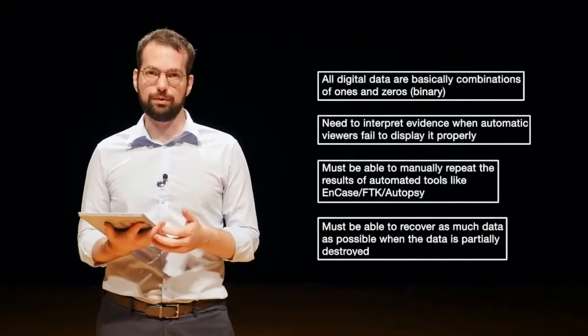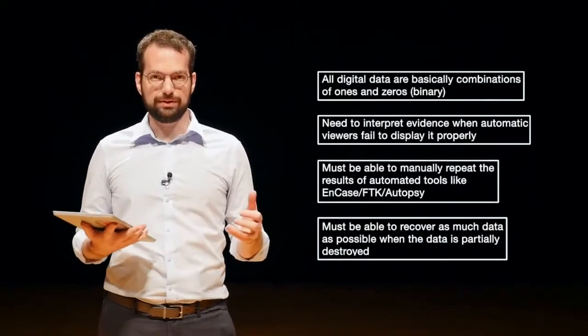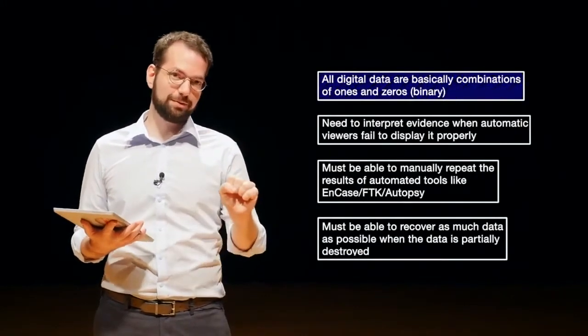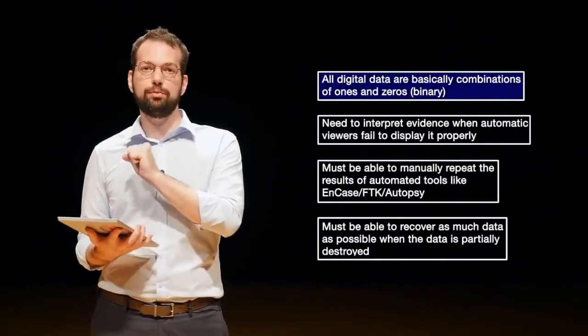So whenever we're talking about data on computers or on your phone or cameras or whatever else you're working with, we store data in its lowest representation as a collection of ones and zeros. So these ones and zeros we have to convert or interpret into information that a human can understand.